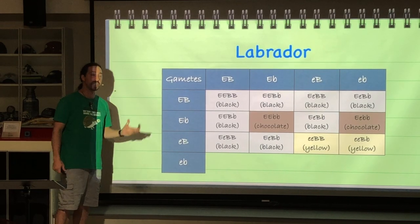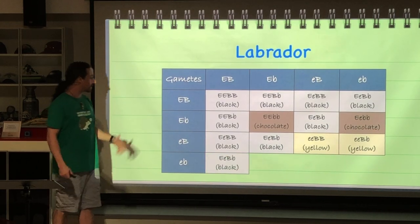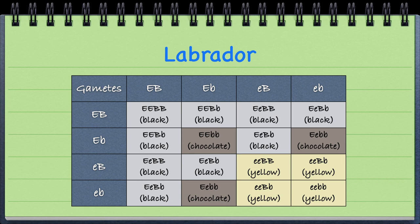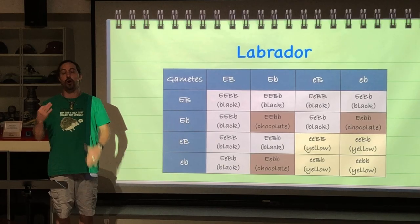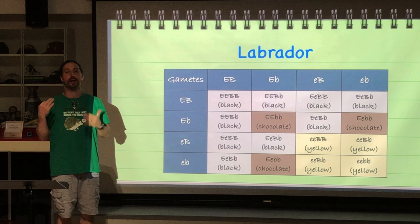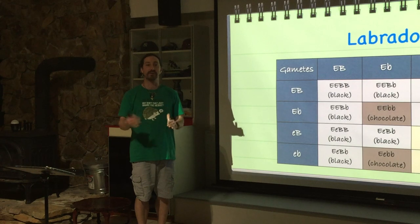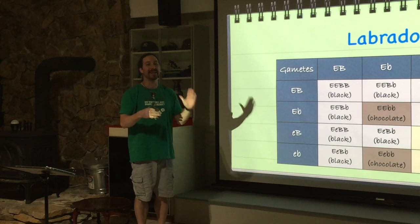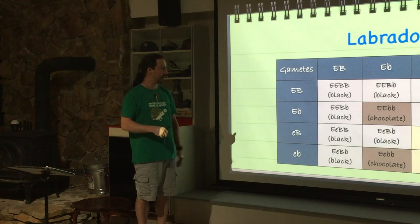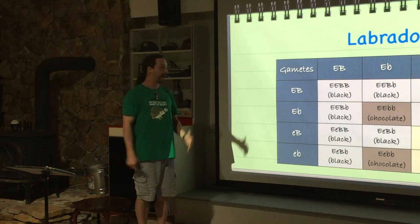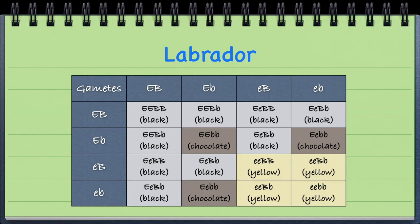If the gamete is recessive for both genes, we end up with 25% black, 25% chocolate, and 50% yellow. If the offspring is homozygous recessive for the first gene, they appear yellow. If homozygous recessive for the second gene but dominant for the first — meaning at least one dominant allele for the first gene — they appear chocolate. If they have a dominant allele in both genes, they appear black.